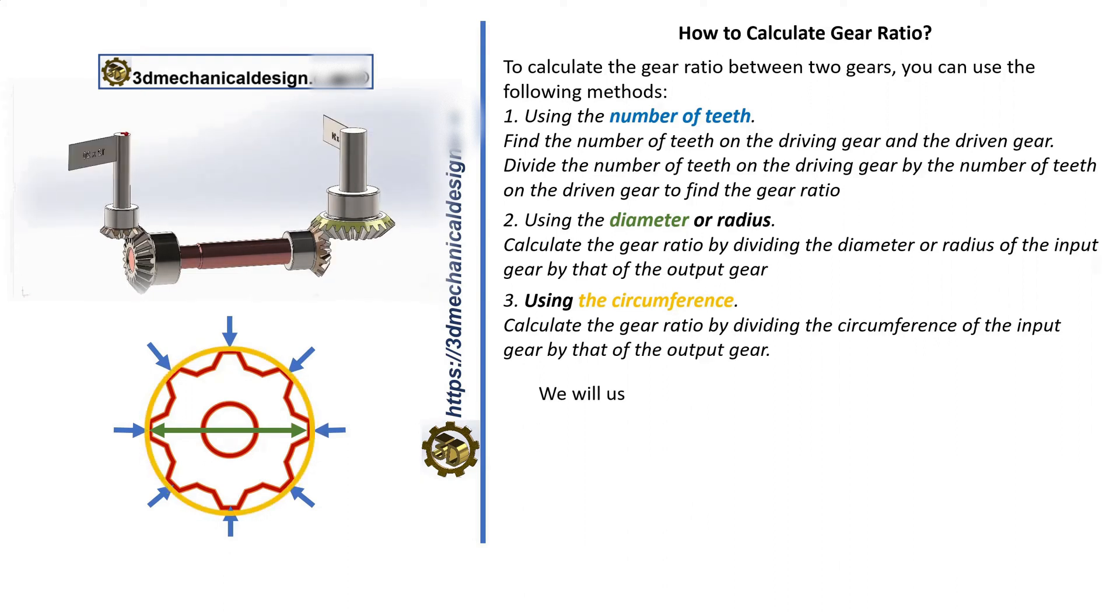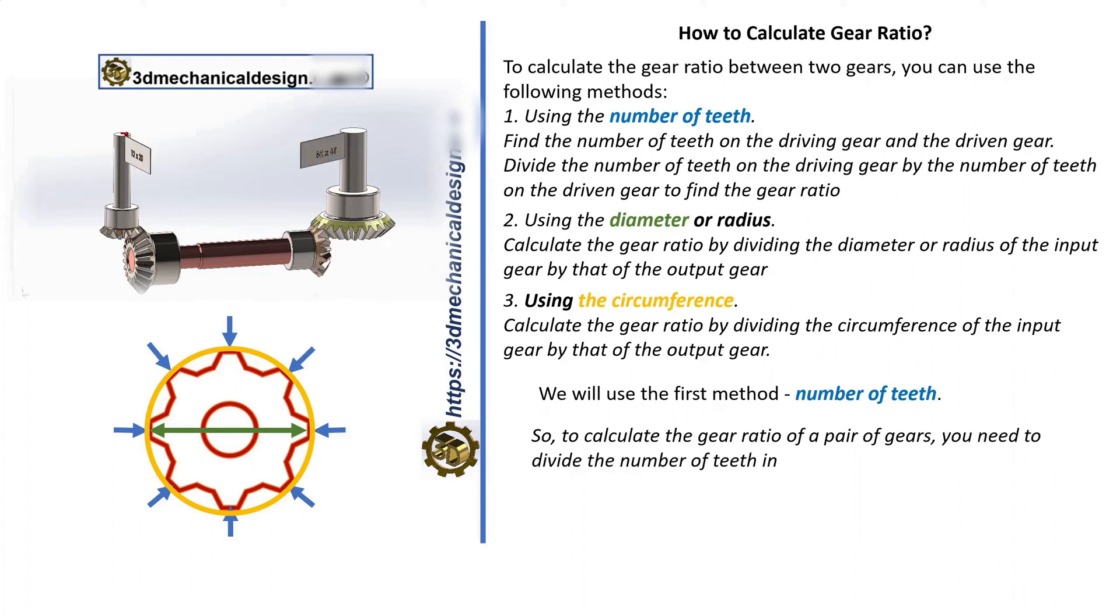We will use the first method, number of teeth. So, to calculate the gear ratio of a pair of gears, you need to divide the number of teeth in the driven gear by the number of teeth in the driver gear. This formula is expressed as gear ratio equals teeth of the driven gear divided by the teeth of the drive gear.